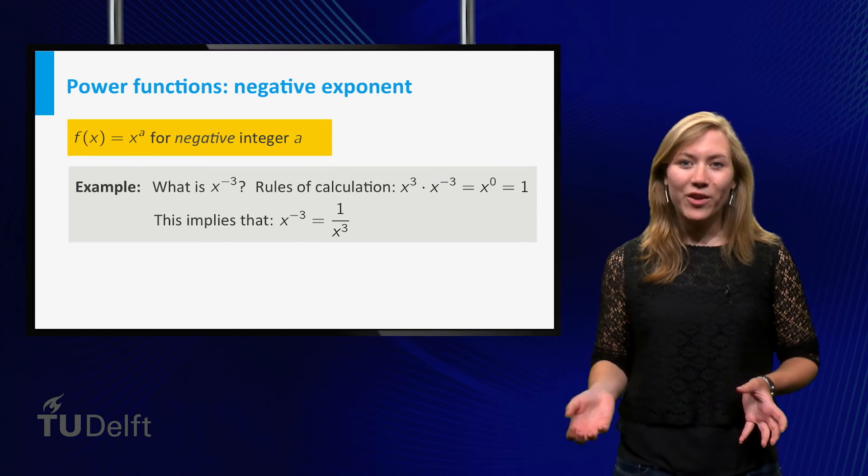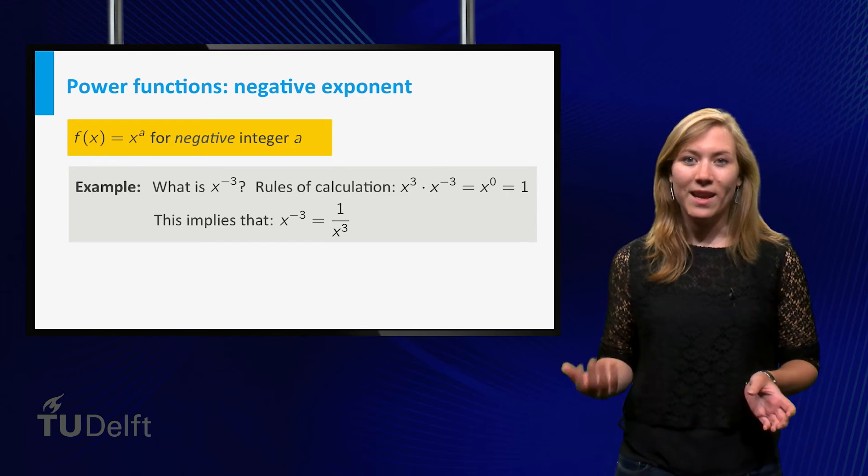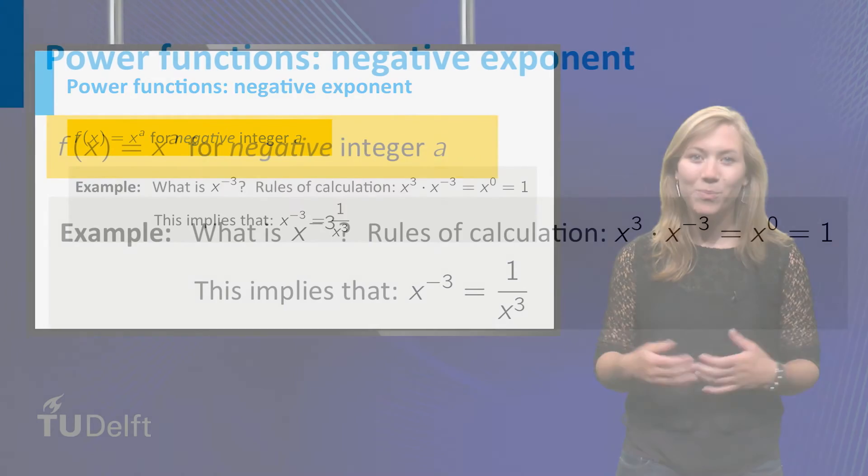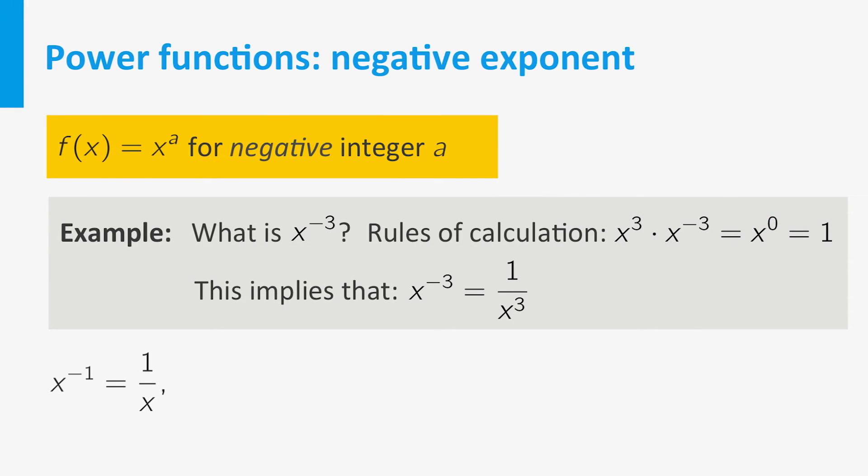In this way, we can define x to the power a with a a negative integer as follows. For a equal to minus 1, we have 1 over x. For a equals minus 2, we have 1 over x squared. For a equal to minus 3, we have 1 over x cubed, etc.